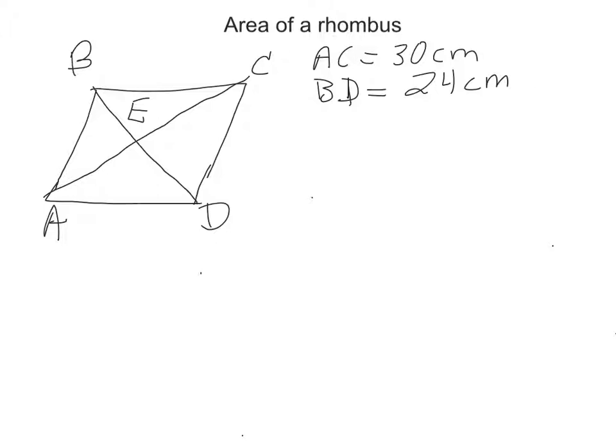A rhombus is, first of all, it does have all four congruent sides. It's not a square though. It's kind of like a square that somebody squashed down a little bit.